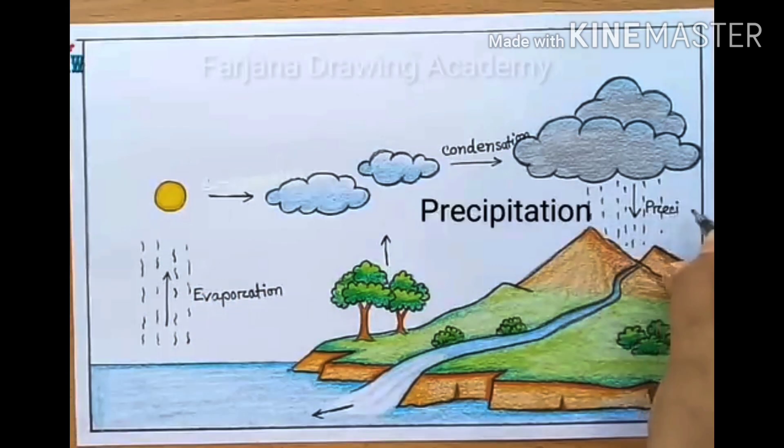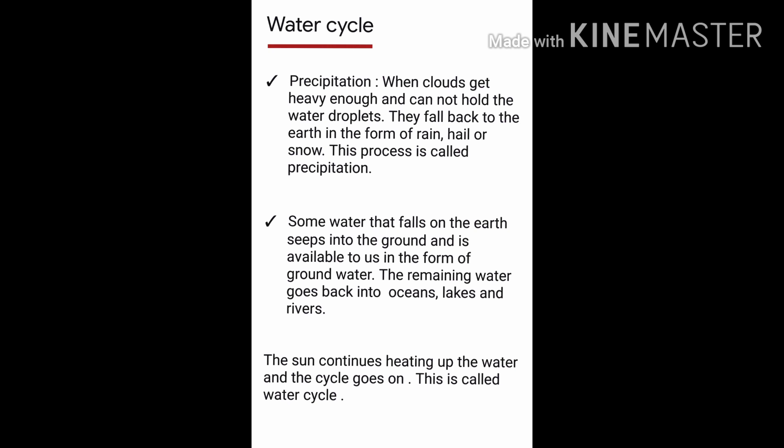When these clouds get heavy and cannot hold the water droplets, they fall back to the earth in the form of rain, hail, or snow. This process is called precipitation. After the water has fallen on the earth, it seeps into the ground and is available to us in the form of ground water.